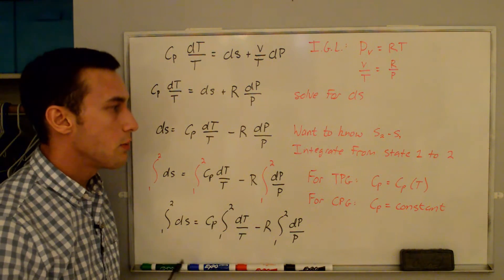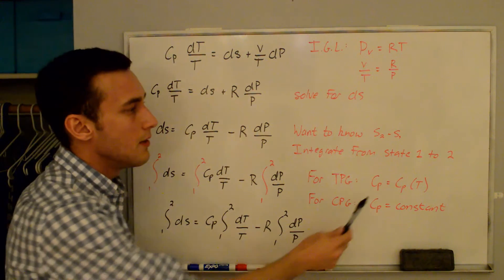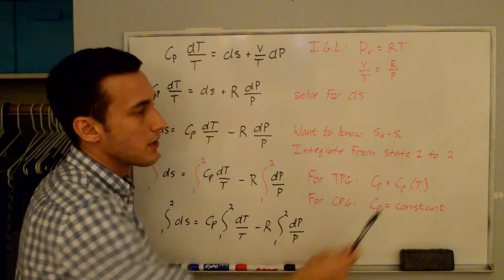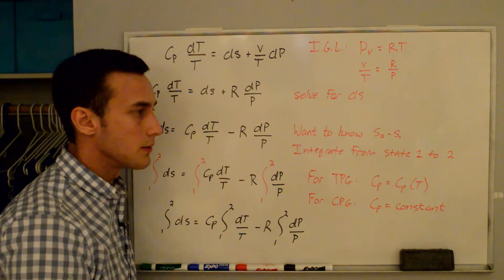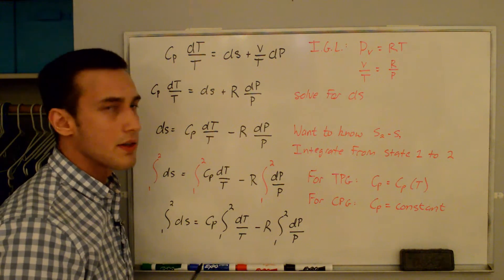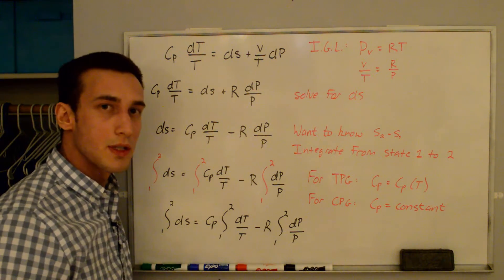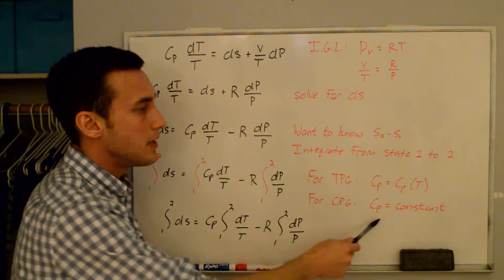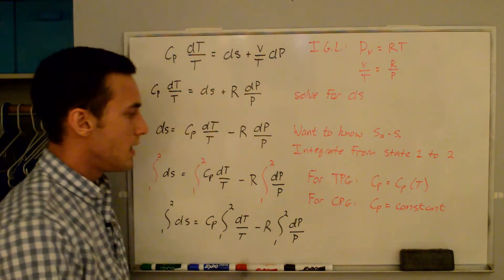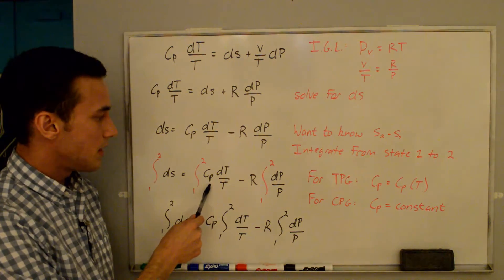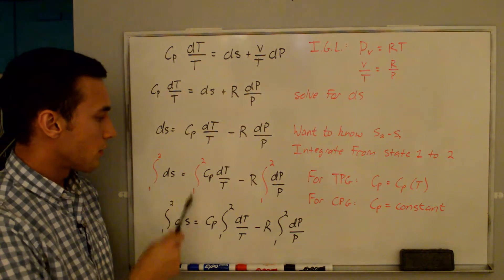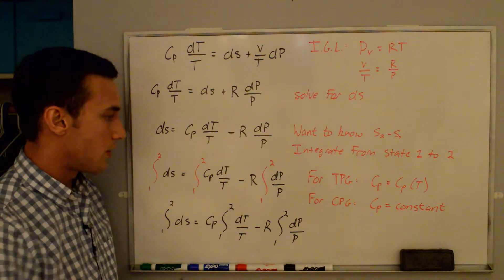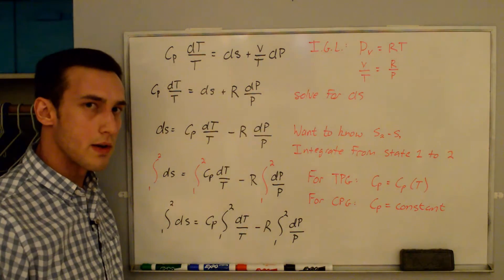For a thermally perfect gas, cp is a function of temperature. However, if we make a further assumption that we have a calorically perfect gas where cp is constant, then we can pull cp out of the integral and we end up with this expression.